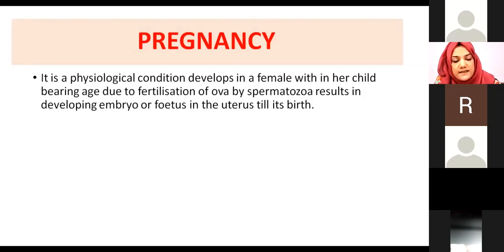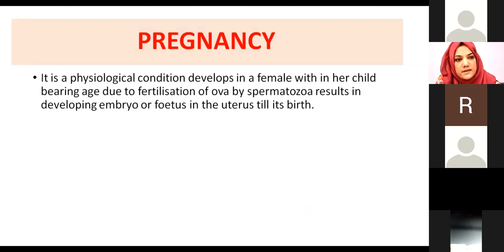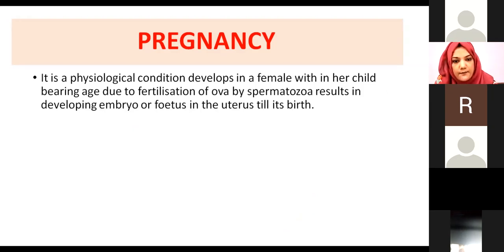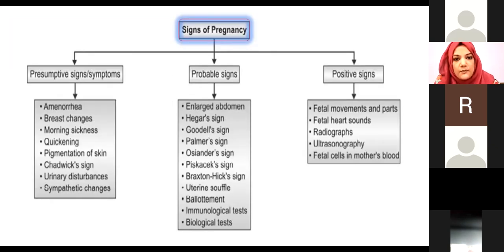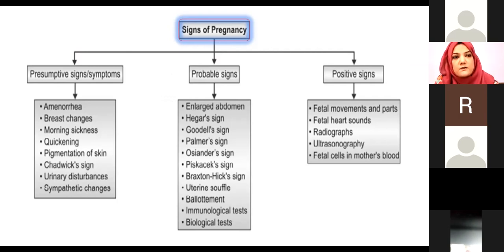Pregnancy is basically a physiological condition that develops in a female within her child-bearing age due to fertilization of the ovum by spermatozoa, resulting in a developing embryo or fetus in the uterus until birth. For medical legal purposes, doctors are asked to determine whether the female is pregnant or not.